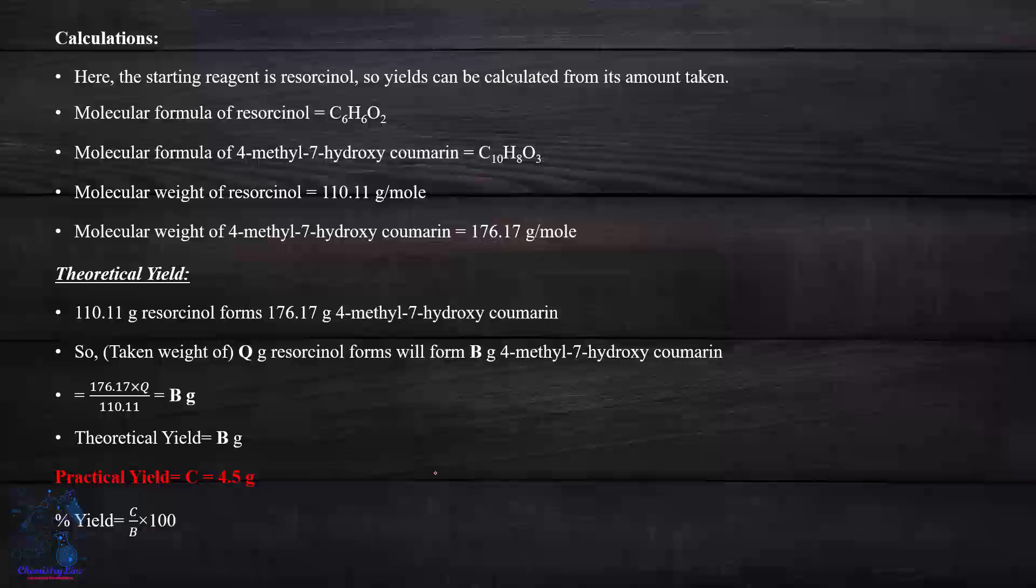In the calculation, molecular formula of resorcinol and 4-methyl-7-hydroxycoumarin: If 110.11 gram per mole of resorcinol gives 176.17 gram of product, then 5.2 gram gives a different amount. Practical yield is 4.5, so 4.5 divided by theoretical yield times 100 gives percentage yield.